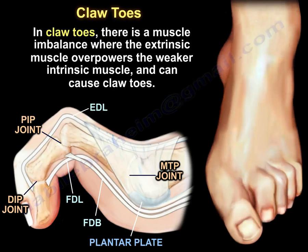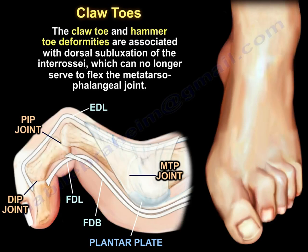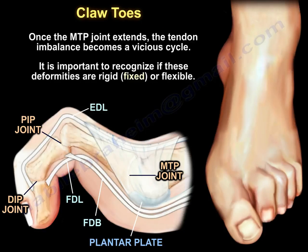A muscle imbalance where the extrinsic muscle overpowers the weaker intrinsic muscle can cause claw toes. The claw toe and hammer toe deformities are associated with dorsal subluxation of the interossei, which can no longer serve to flex the metatarsophalangeal joint. Once the MTP extends, the tendon imbalance becomes a vicious cycle. It is important to recognize if these deformities are rigid — meaning fixed — or flexible.